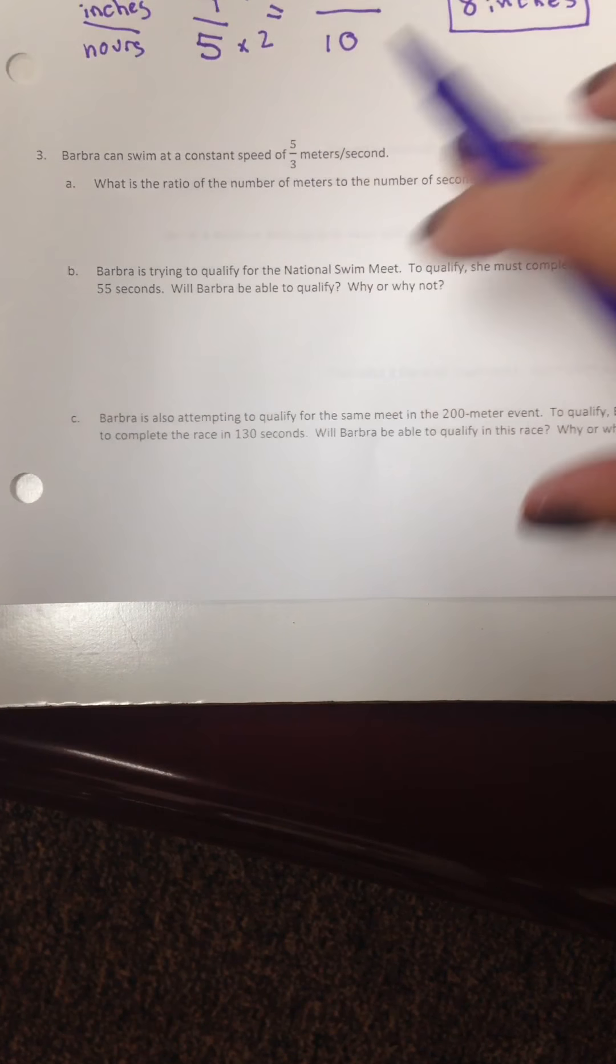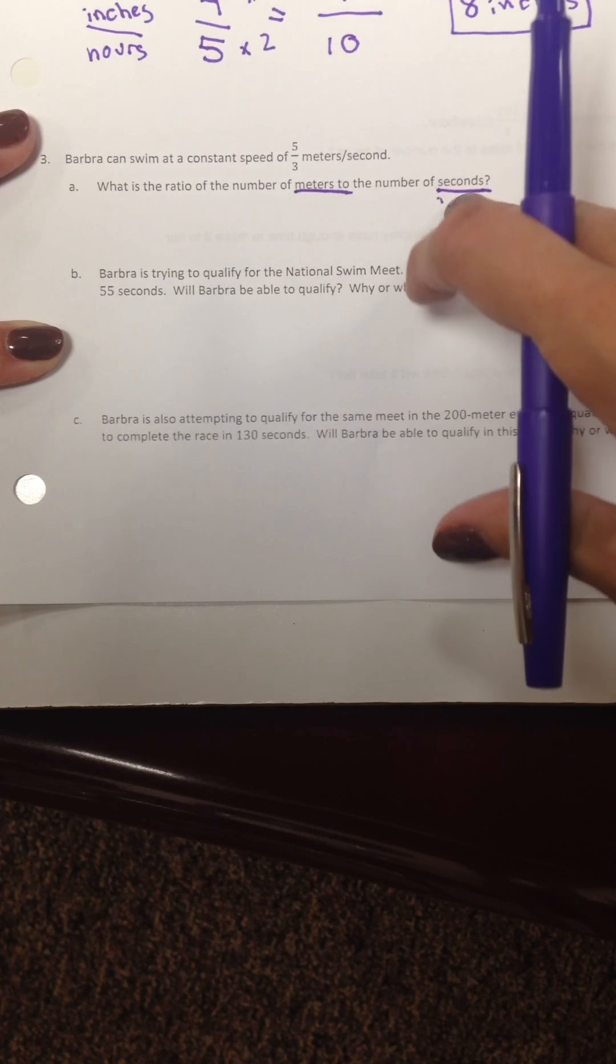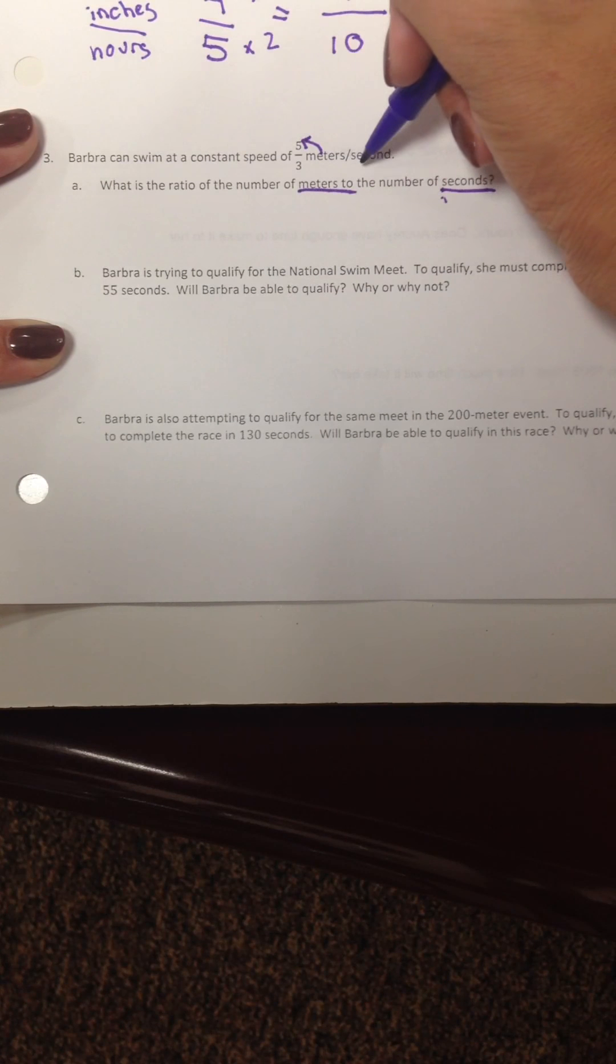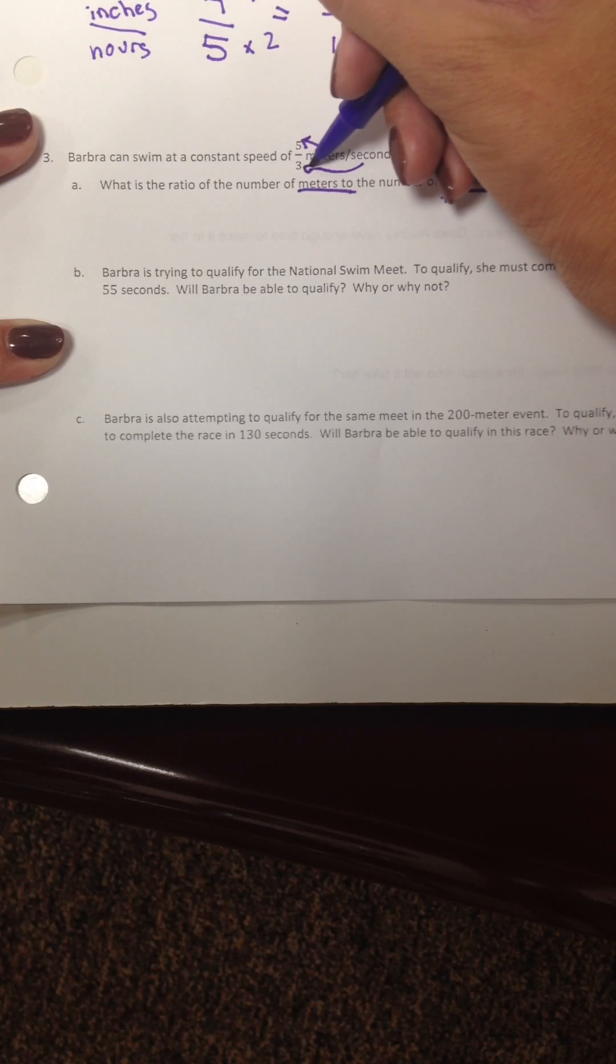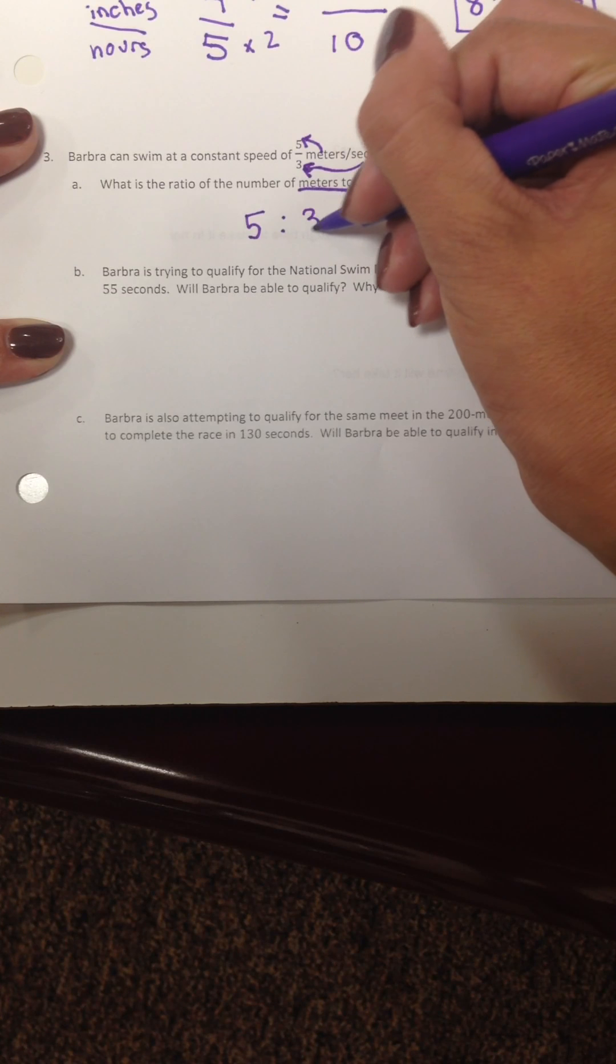What is the ratio of the number of meters to number of seconds? So I'm going to underline meters to seconds. This is going back to 8.1, our ratios. They want to know meters to seconds. Well we know that meters is 5, and seconds is 3. So we would write 5 to 3. Remember you can write that as 5 dot dot 3, 5 to 3, or you could even leave it as a fraction 5 over 3.